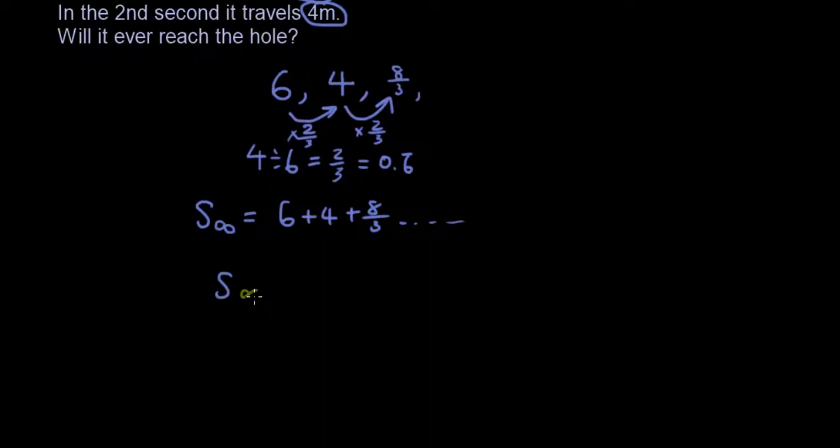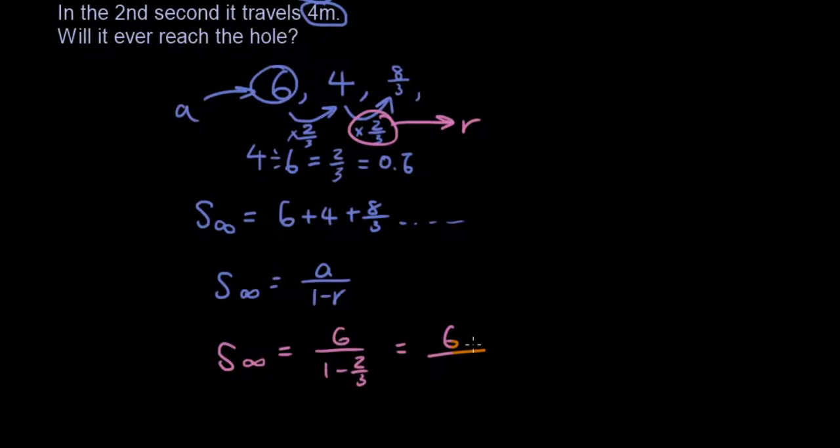So how do we do that? Well, we have the sum to infinity formula, which is a over 1 minus r. So a is the first term, which is 6. r is 2 over 3. So let's put all that into our formula. And we got 6 divided by 1 minus 2 over 3, which is 6 divided by 1 over 3. So putting that into your calculator, you will get 18.